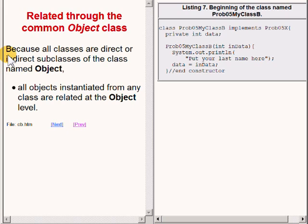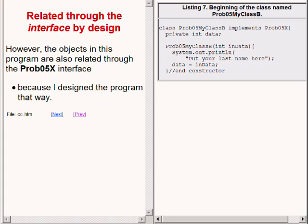Because all classes are direct or indirect subclasses of the class named Object, all objects instantiated from any class are related at the Object level. The objects in this program are also related through the interface named prob05x, because I designed the program that way.